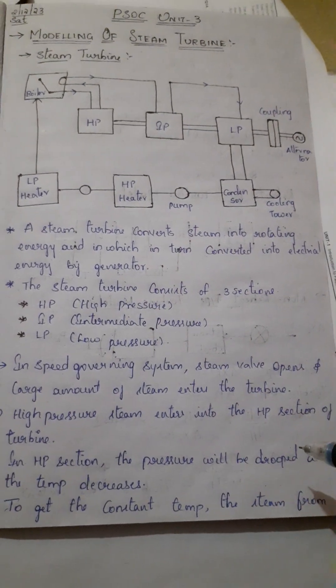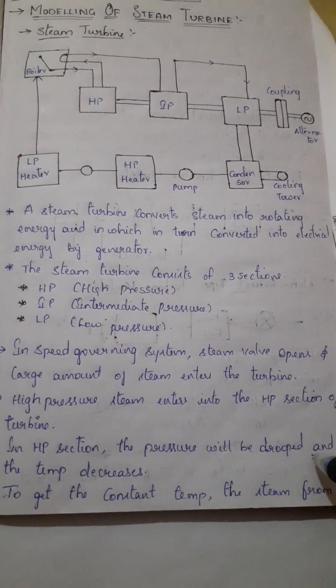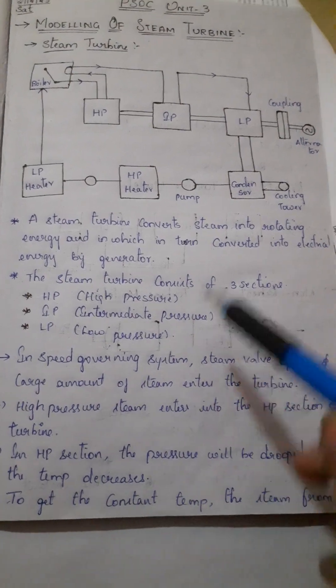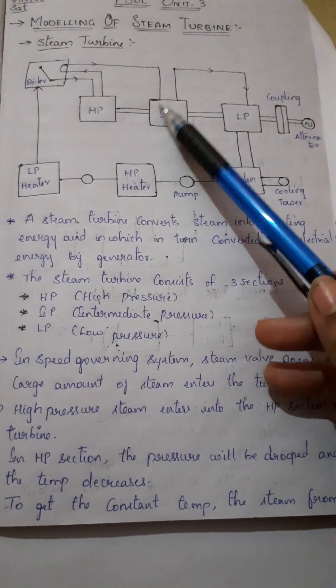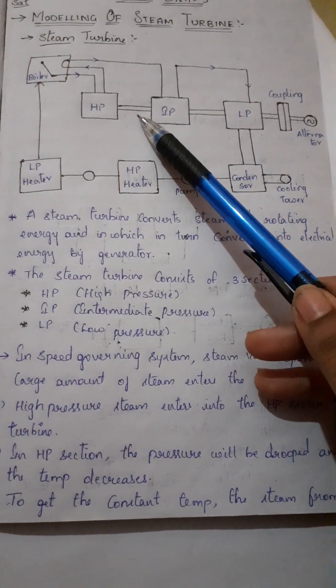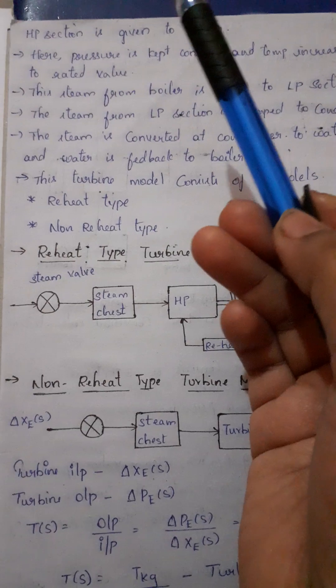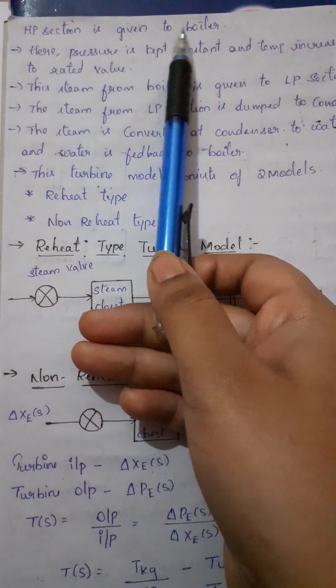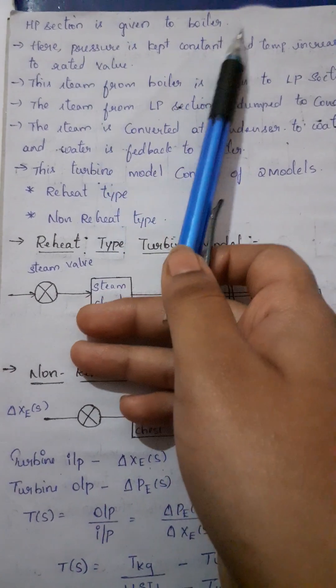In HP section, the pressure will be dropped and the temperature decreases. To get the constant temperature, when I get the constant temperature, HP section is given to the boiler. Steam from HP section is given to the boiler.